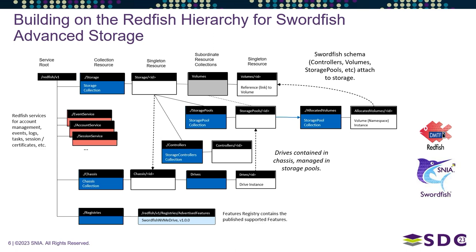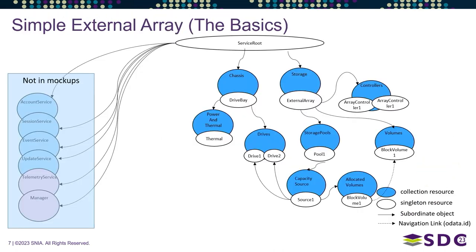The /registries path is added on the Swordfish side as a way for clients to tell what you've implemented — a straightforward way to say: this is a block device, you've implemented provisioning, replication, event notification. That's what's in that registries directory. There are lots of different things you can implement.